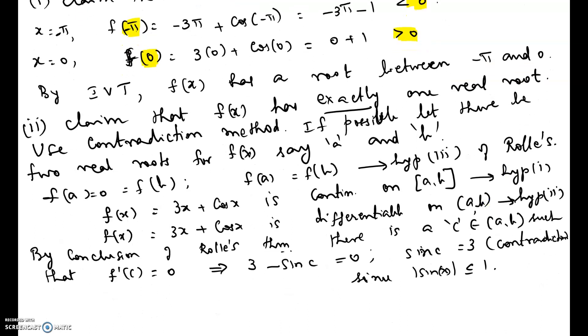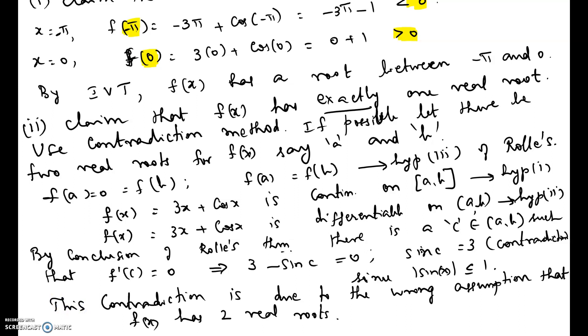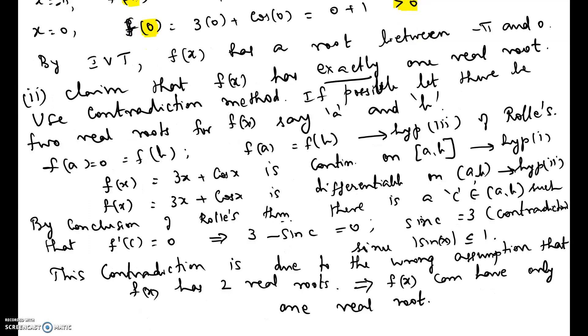We are getting a contradiction because we assumed there are two roots. This contradiction is mainly due to the wrong assumption that f(x) has two real roots a and b. So f(x) cannot have two real roots, which tells us that f(x) can have only one single real root. Note that we already established that f(x) has at least one real root between negative pi and 0 by the Intermediate Value Theorem, and now we have shown it cannot have two — so f(x) has exactly one real root. Hope this video helped.